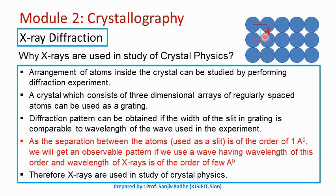Why are X-rays used in this diffraction experiment? The width of the slit is of the order of the diameter of the atom, and the diameter of the atom is of the order of one or two angstroms. In order to perform the diffraction experiment, we need waves having wavelength of that order — one or two angstroms. As the separation between the atoms used as a slit is of the order of one or two angstroms, we will get an observable pattern if we use waves having wavelength of the same order. The wavelength of X-rays is of that order. Therefore, X-rays are used when a crystal is used as a diffraction grating.